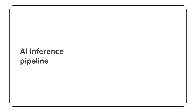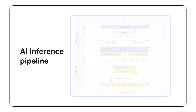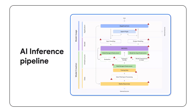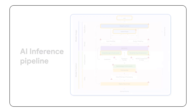A typical AI inference or usage pipeline involves several stages such as model storage, deployment, integration with applications, and interaction with users. Each of these stages presents unique security challenges.